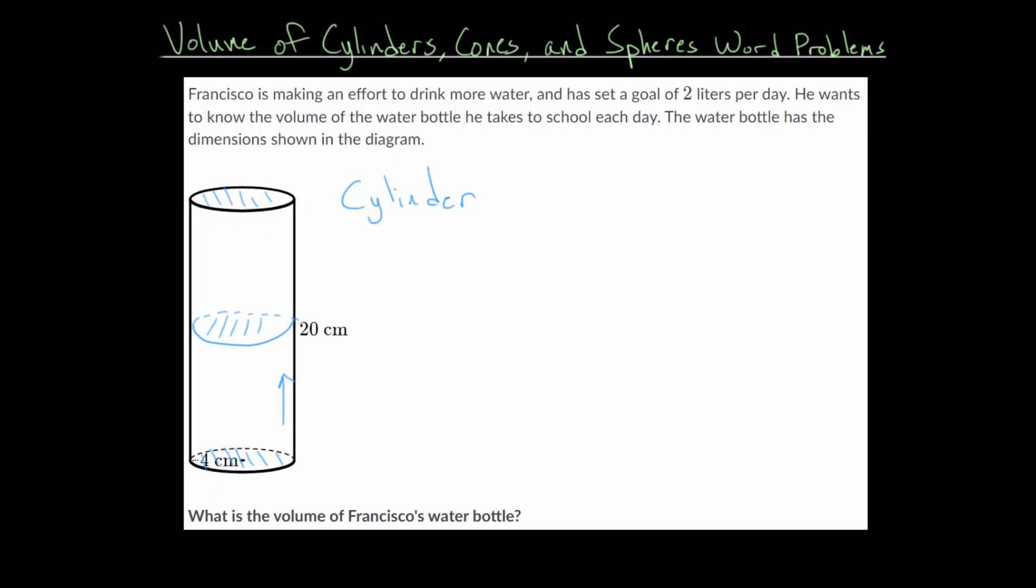With a cylinder, remember that the formula to find the volume is we take the area of the base and multiply it by the height. So the cylinder volume is the area of the base, which is the area of a circle, so we have pi multiplied by the radius squared.